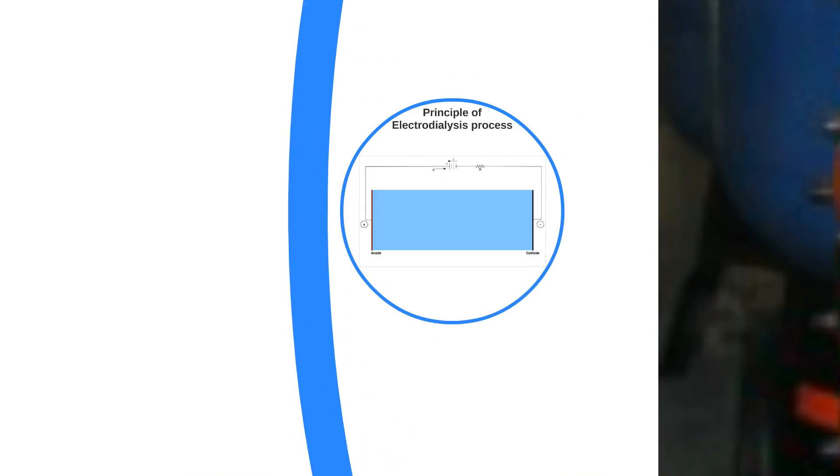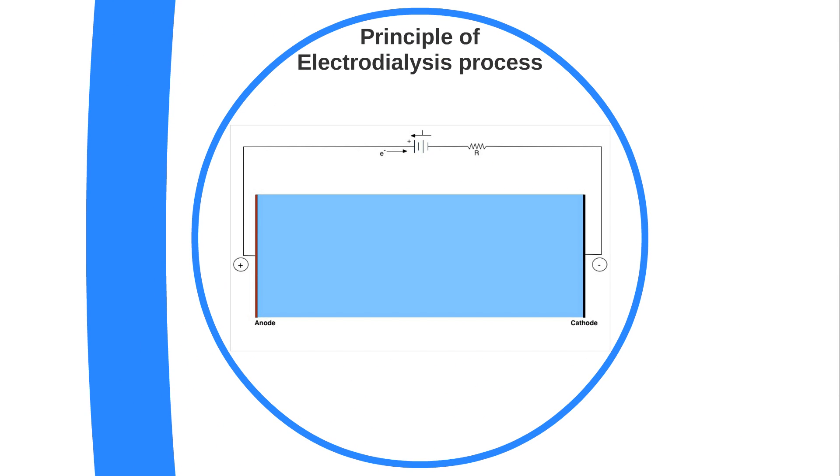To simulate electrodialysis process, we need to understand its working principle. Let's consider an electrolyte between anode and cathode. The negatively charged anions move towards anode and the positively charged cations move towards cathode. Now place a selective ion exchange membrane, for example cation exchange membrane which allows only cations to pass through and reflects anions.